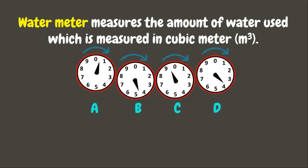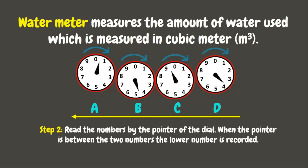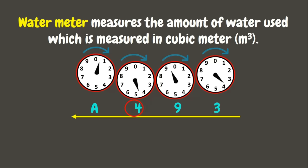To read the water meter, we also read from right to left. Starting with dial D, the pointer points between 3 and 4, so we record the smaller one — 3. In dial C, the pointer points between 0 and 9 and since it has not yet passed 0, we record 9. In dial B, the pointer points between 5 and 4, so we record the smaller number, which is 4.